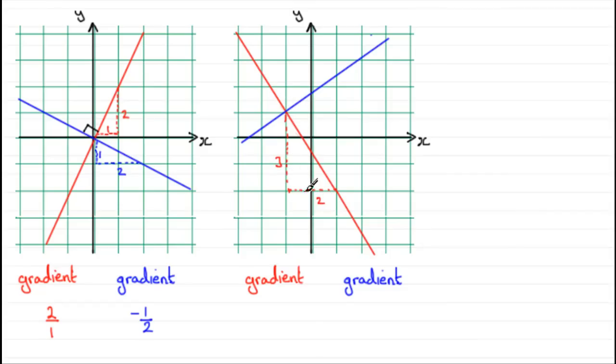So the gradient of the red line is that we're dropping three units, that's minus three, for every two units that we go across in the x direction. Now for the blue one, you can see that this three here, if we turn it 90 degrees, it's going to be three in that direction. And if we turn the two units 90 degrees, we rise up two units.